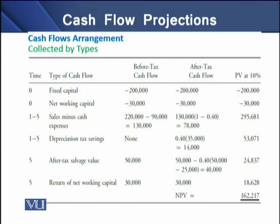We can also classify project cash flows according to their types. The first type is fixed capital — cash flows related to the investment in fixed assets are termed fixed capital cash flows. Then, cash flows incurred in relation to working capital items like current assets, inventories, payables, and other accrued expenses are termed net working capital cash flows. Then we have operating cash flows, which are the result of sale income minus cash expenses.